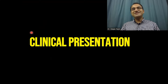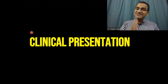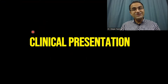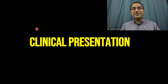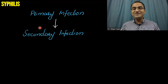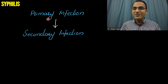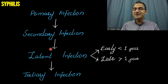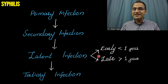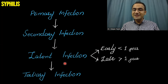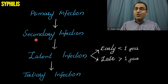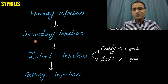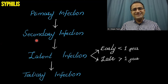Clinical presentation differs for each stage of syphilis infection. The stages include primary infection, secondary infection, latent (early latent and late latent), and tertiary infection. We will discuss each one of them in detail.